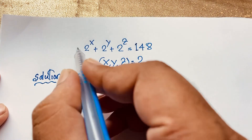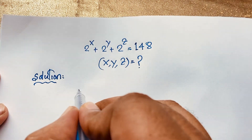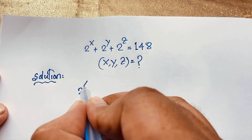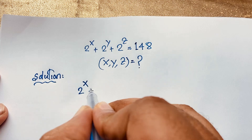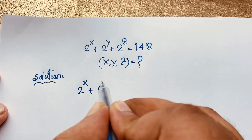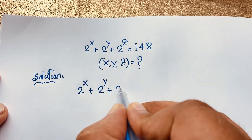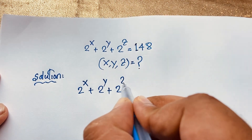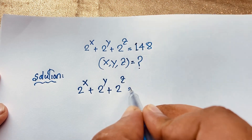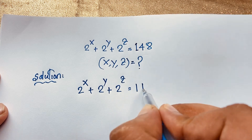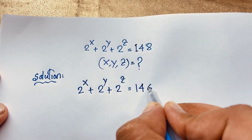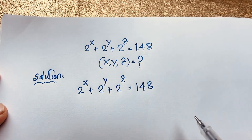Our question is: 2 to the power x plus 2 to the power y plus 2 to the power z is equal to 148. This is our question.